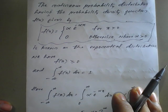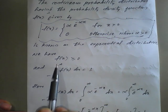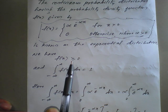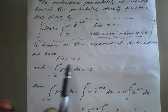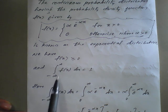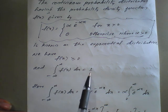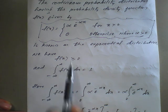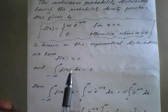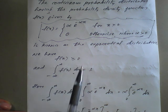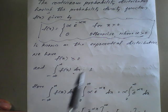As we know, the conditions of a probability density function are: first, f(x) should be greater than or equal to 0 — meaning positive; and second, the integration from minus infinity to plus infinity of f(x) dx should equal 1. If both conditions are satisfied, we conclude it is a valid probability density function.